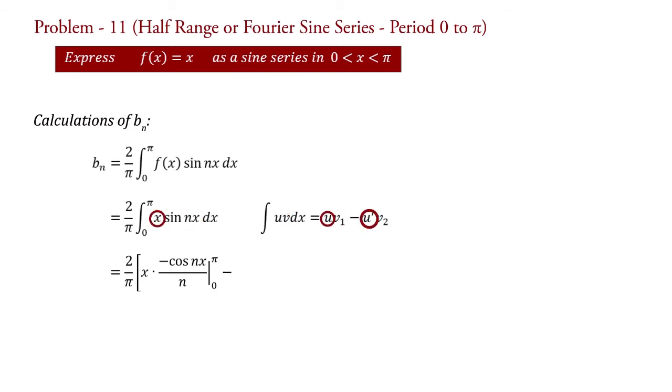That is differentiation of u and that is 1. So we put here 1 into v2. That is integration of v1, which is integration of minus cos nx upon n. Therefore, we put here minus sin nx upon n square with limit 0 to π.